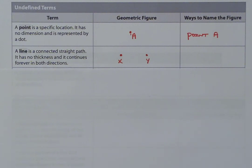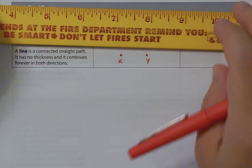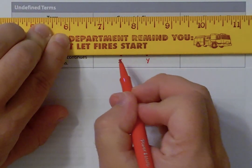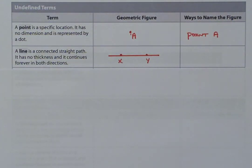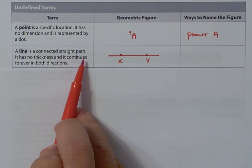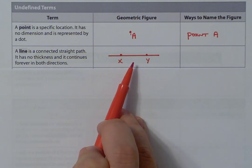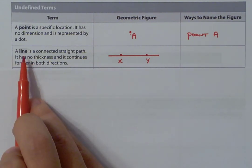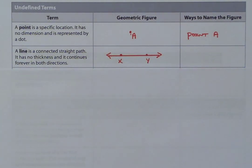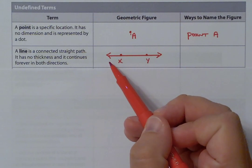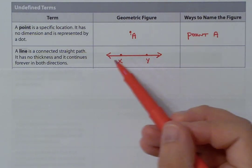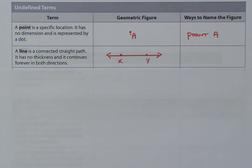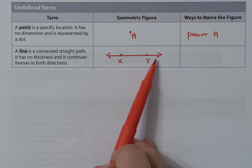So I have my two points, X and Y. Based off the definition, it's a connected straight path, so we're going to connect these points using a ruler — a straight line. The second part of this definition is that it continues forever in both directions, so we need to show that by drawing arrows on both ends of the line. Arrows on both ends indicate it's a line. If you only do it on one side, we're talking about a ray; if you don't put arrows on either end, then you're talking about a line segment.